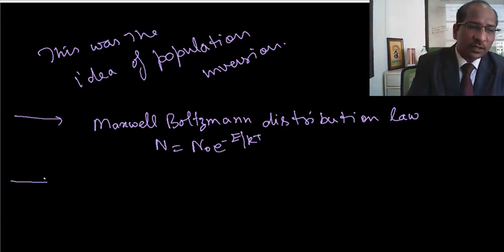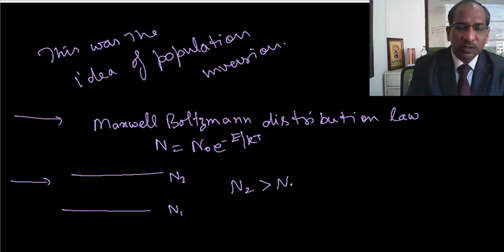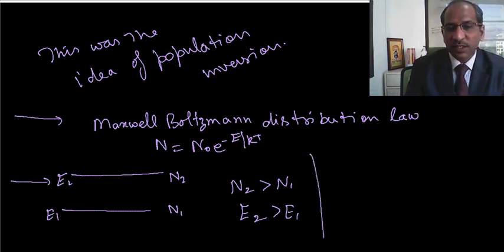And second concept we have used: for laser light, N2, which are the number of atoms in the excited state, should be larger compared to N1. And we know this is E2, this is E1. So here the situation is E2 is greater than still E1. So these were the ideas.